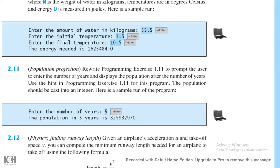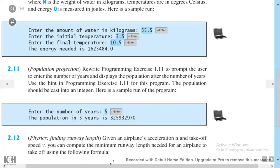Use the hint in programming exercise 1.11 for this program. The population should be cast into an integer. Here is a sample run of the program. Now let's go to exercise 1.11 and see what the question was.